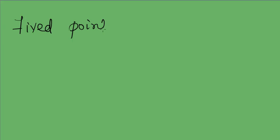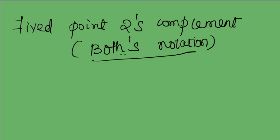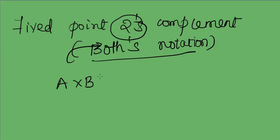Today we are going to discuss fixed-point 2's complement multiplication, also called Booth's multiplication. In Booth's notation, we handle cases where either operand in a multiplication a × b is negative, using 2's complement representation to represent negative numbers in multiplication.